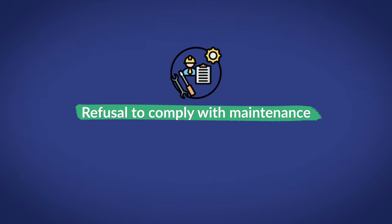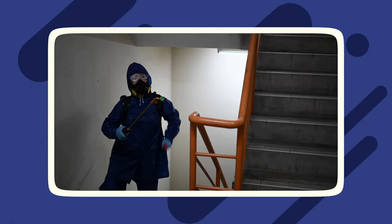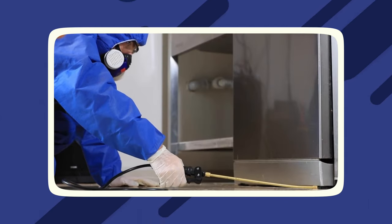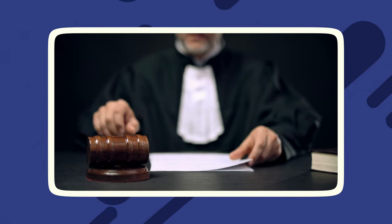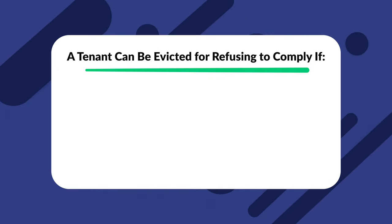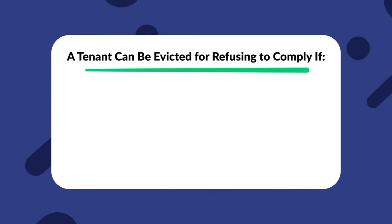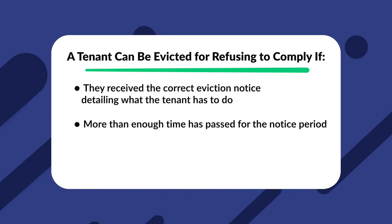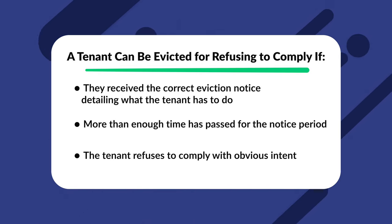Number five: refusal to comply with maintenance. Sometimes rental units require maintenance to get rid of pests such as cockroaches or rats, particularly when there is an infestation. New Hampshire law takes into account the health and maintenance codes. If a tenant violates any of these codes, the landlord has to issue a 30-day notice to quit. A tenant can be evicted for refusing to comply if they receive the correct eviction notice detailing what the tenant has to do, more than enough time has passed for the notice period, and the tenant refuses to comply with obvious intent. The tenant must move out within 30 days; if unable to do so, the landlord may continue filing for eviction.